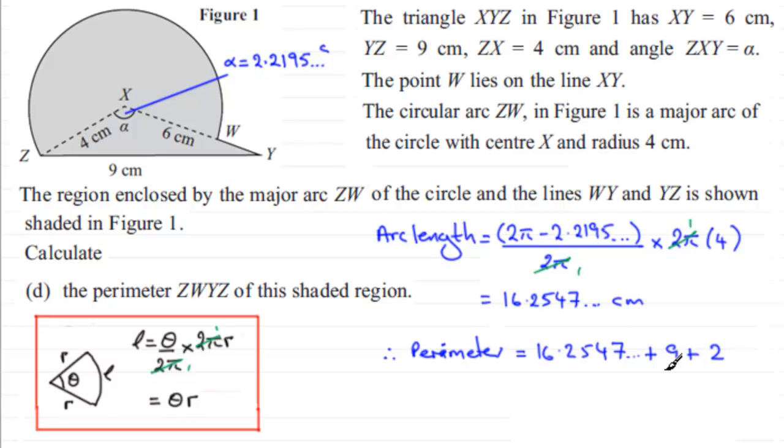Add this up and you end up with 27.2547 and so on. And if we round this to three significant figures it's going to be 27.3 centimetres given to three significant figures, 3sf for short.